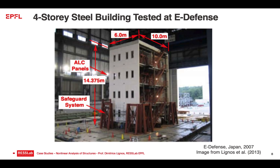There were a couple of other peculiarities: the building was tested with exterior cladding. One side was open as the observation side. Cladding was attached to the frames according to Japanese practice using deformable connections, so up to a certain drift level it would not be damaged.